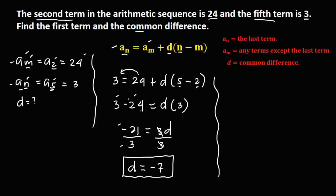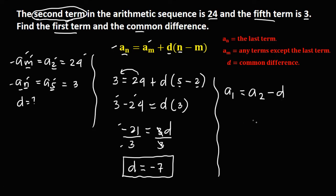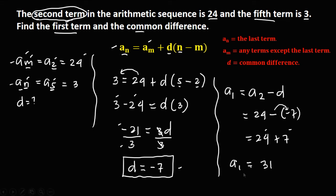To solve for the first term, since we have the second term, a sub 1 equals the second term minus the common difference. Since the second term is 24, we have 24 minus negative 7. Negative minus negative becomes positive, so a sub 1 equals 24 plus 7, which is 31. Therefore, positive 31 is the first term in the arithmetic sequence.